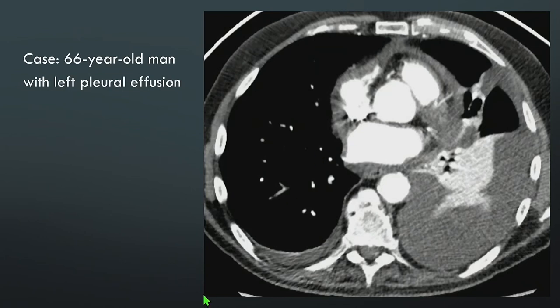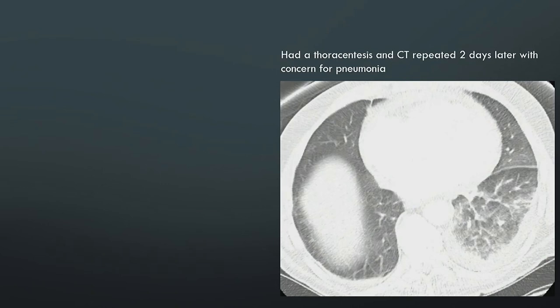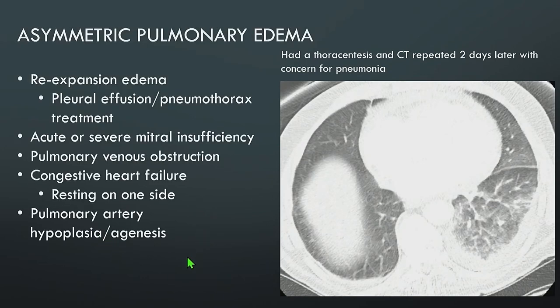Next case: a 66-year-old man with a left pleural effusion and atelectasis in the left lower lobe. After thoracentesis, a CT two days later was read as left lower lobe pneumonia, but the patient had no fever, no elevated white count, and no symptoms of pneumonia. This is actually re-expansion pulmonary edema — when a large pleural effusion or pneumothorax is drained rapidly, cytokines are released as the lung re-expands, causing fluid within those septa. Re-expansion edema is one cause of asymmetric pulmonary edema.